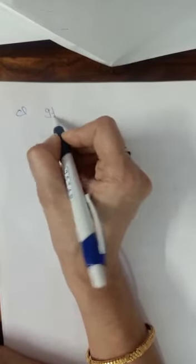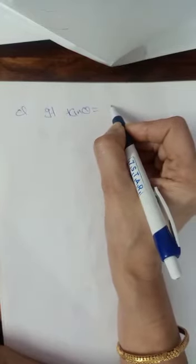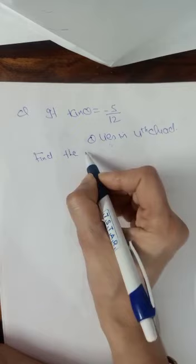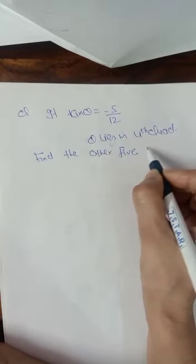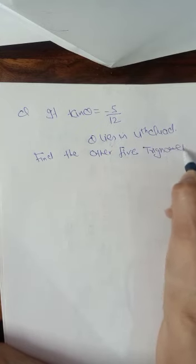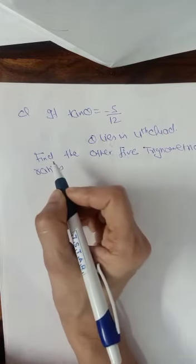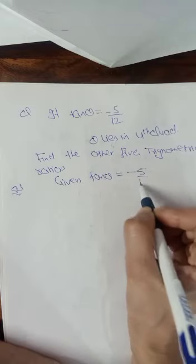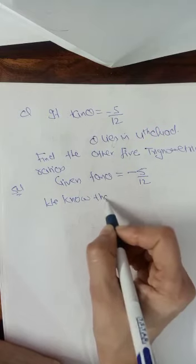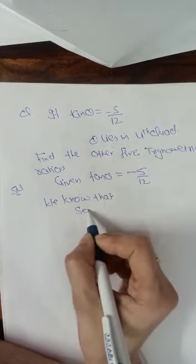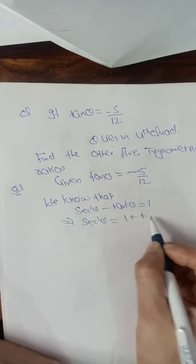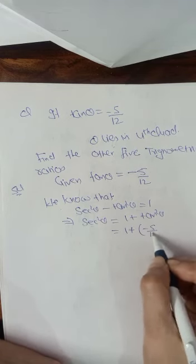Next, suppose we have: if tan θ = −5/12 and θ lies in the fourth quadrant, find the other 5 trigonometric ratios. Given tan θ = −5/12. We know the identity sec²θ − tan²θ = 1, which implies sec²θ = 1 + tan²θ = 1 + (−5/12)² = 1 + 25/144.